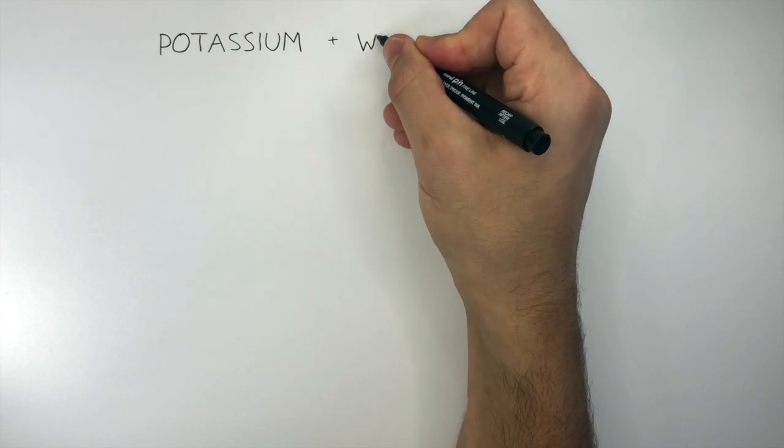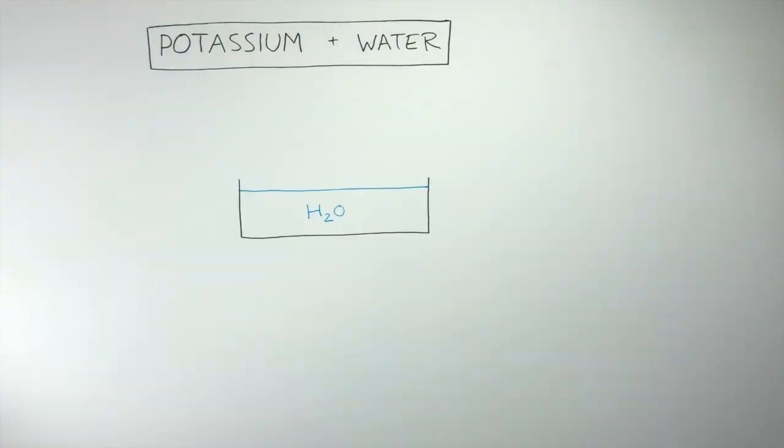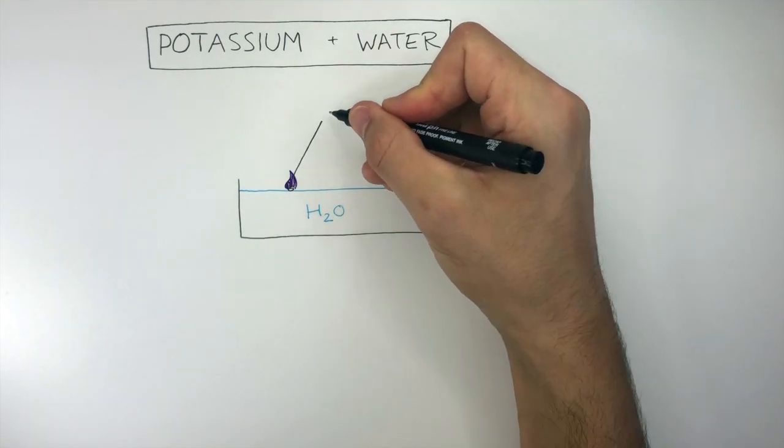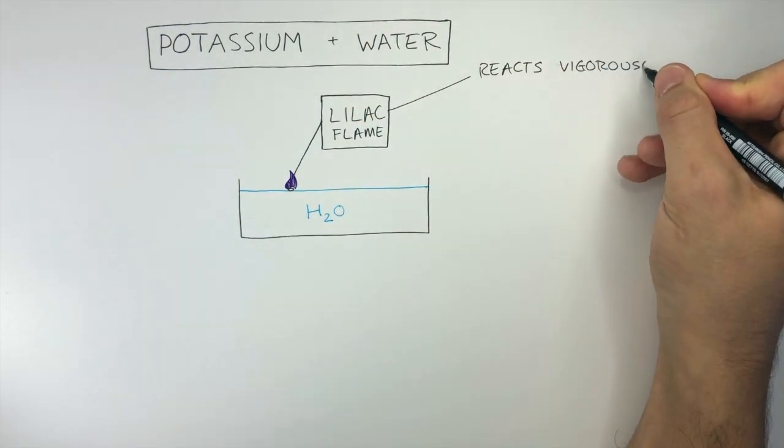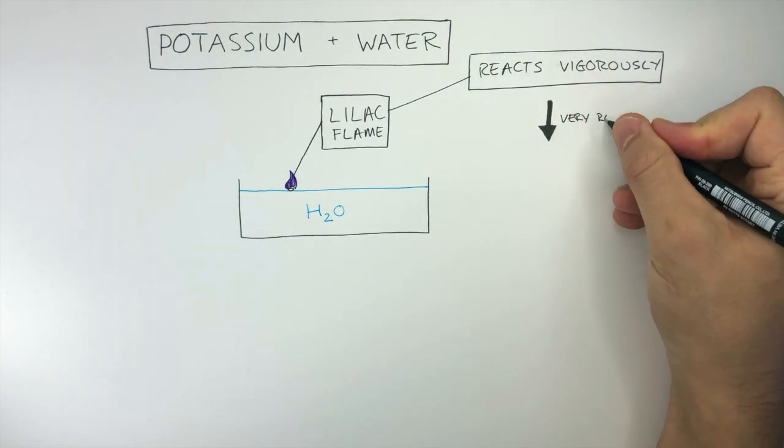Potassium reacting with water is a more vigorous reaction compared to the previous two. When the potassium is dropped into the water, it reacts immediately, burning with a lilac flame. It reacts vigorously, as potassium is very reactive.